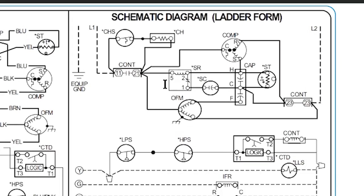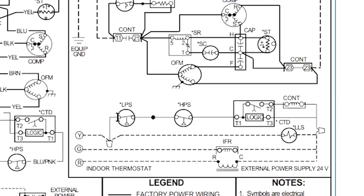The outdoor fan motor: we feed the common terminal on the outdoor fan motor with one side. This diagram doesn't show a thermal overload for the outdoor fan motor, but it does have one — it's just not shown. We've got the common terminal, the fan winding going to the capacitor, and the run winding connecting to L2. The fan connects to one side of the solid bar on the contactor, and the compressor to the other side — on a single-pole contactor both sides are exactly the same.